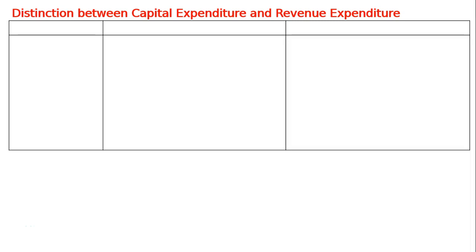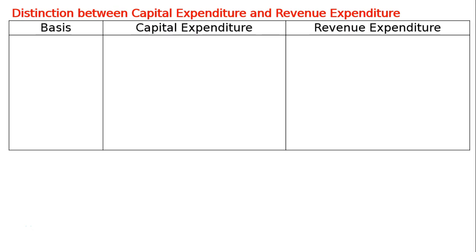Distinction between capital expenditure and revenue expenditure. There will be three columns: the first one is for basis, the second is for capital expenditure, and the third one is for revenue expenditure.